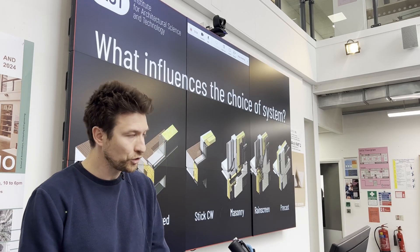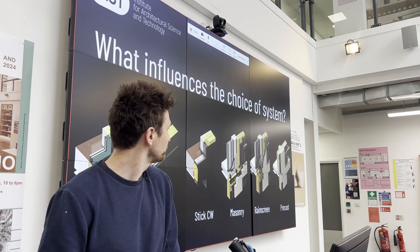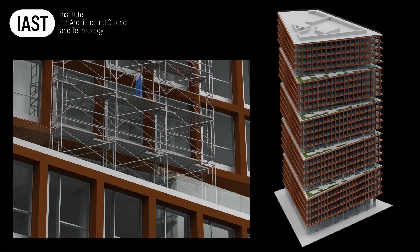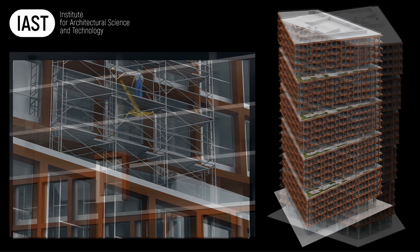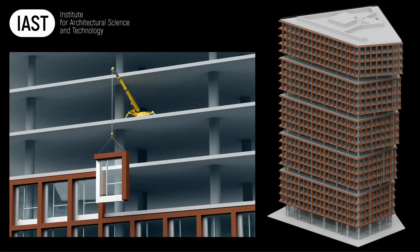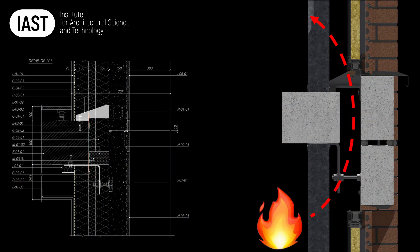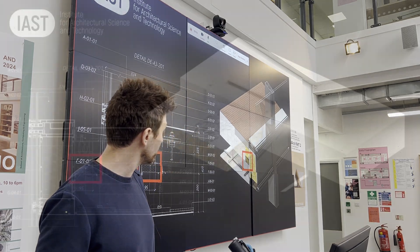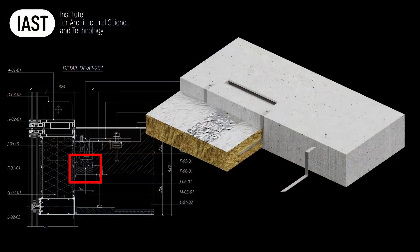What influences the choice of system? If it's a high-rise tower in the center of the city, building the facade from scaffold is impractical. With precast or unitized systems, external access is not required. However, that gap between the facade and the slab is a fire safety hazard, and fire stops will always be required in these instances.